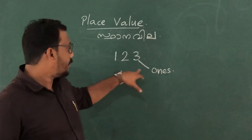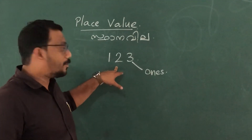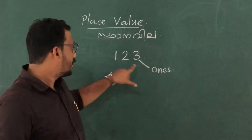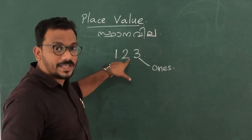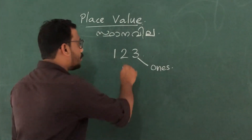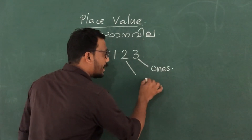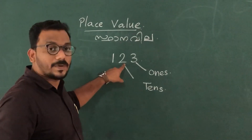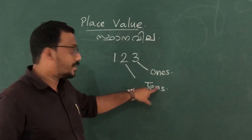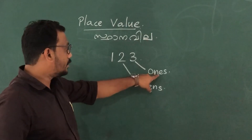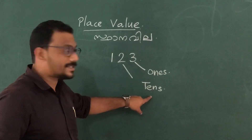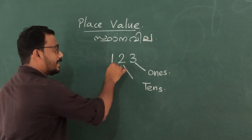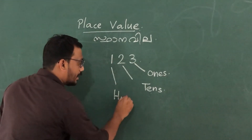In one hundred twenty-three, the number two comes in the place value of tens. And in one hundred twenty-three, the number one is in the place value of hundreds.